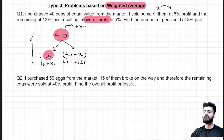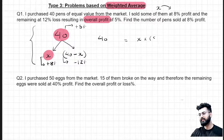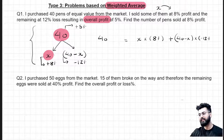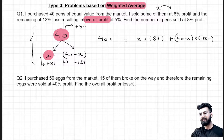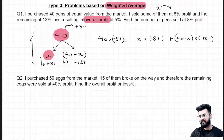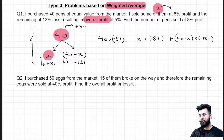So there were 40 pens; out of 40, X number of pens are sold at 8% profit. The remaining — 40 minus X pens — were sold at a loss, using a negative sign. And in the overall quantity, I made a profit of 5%. Since it's a profit, I use a positive sign. Since all three terms have the percentage sign in common, I can simply remove the percentage sign. So the equation becomes: 40 × 5 = X × 8 + (40 − X) × (−12).